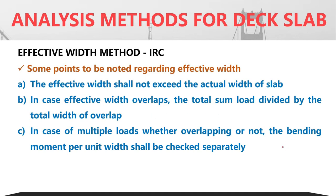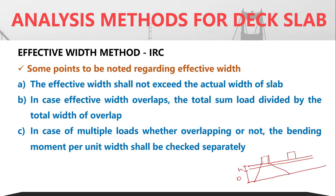When there are multiple wheels — for example, one axle with two tyres — the corresponding effective widths of each tyre can overlap. In such cases, we sum up the loads and divide by the total width of overlap. Even in the case of overlap, we should check the bending moment not only for the combined effect but also for the separate individual effect of each wheel load.